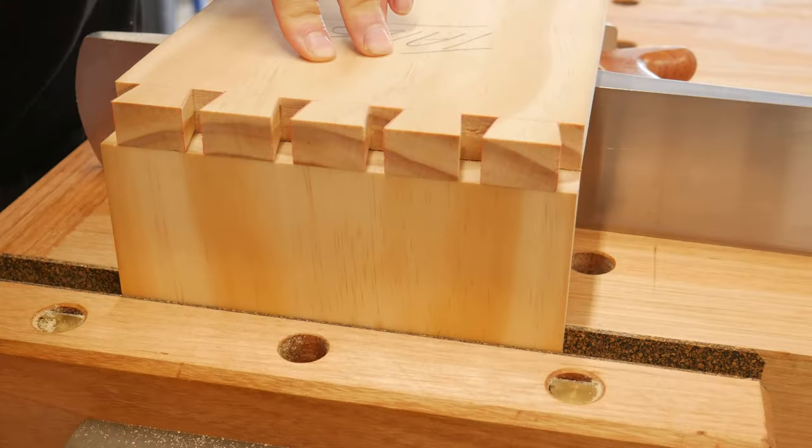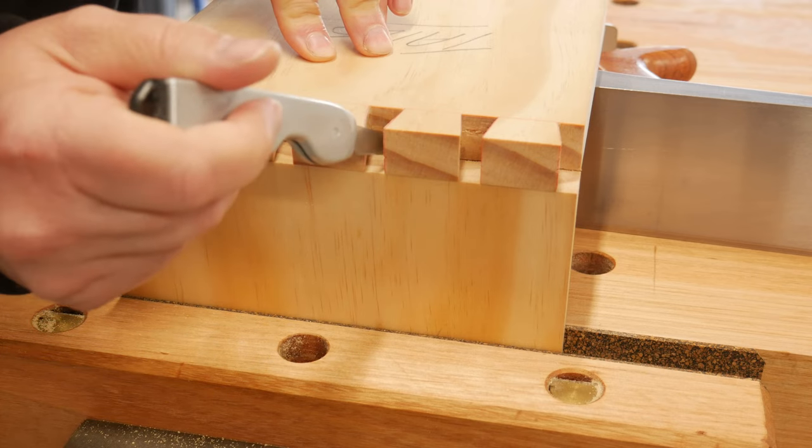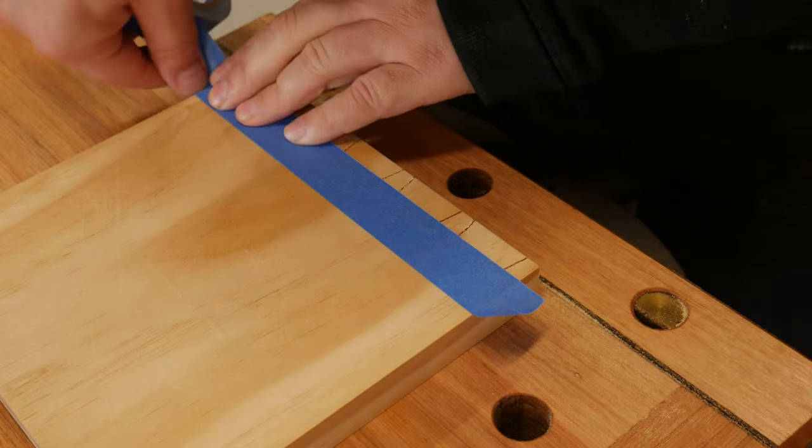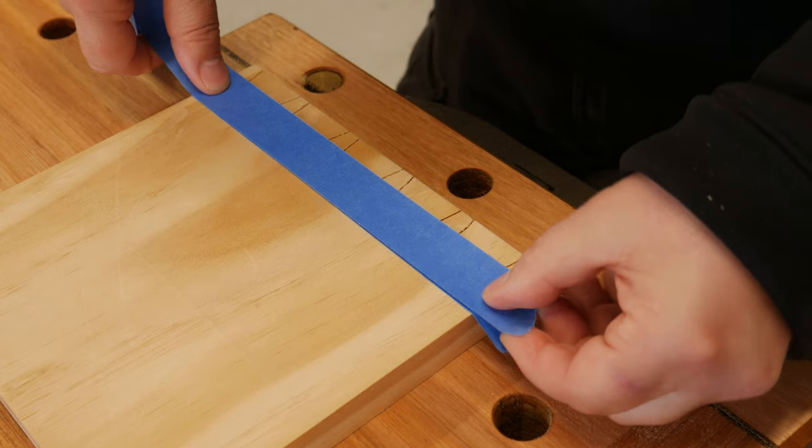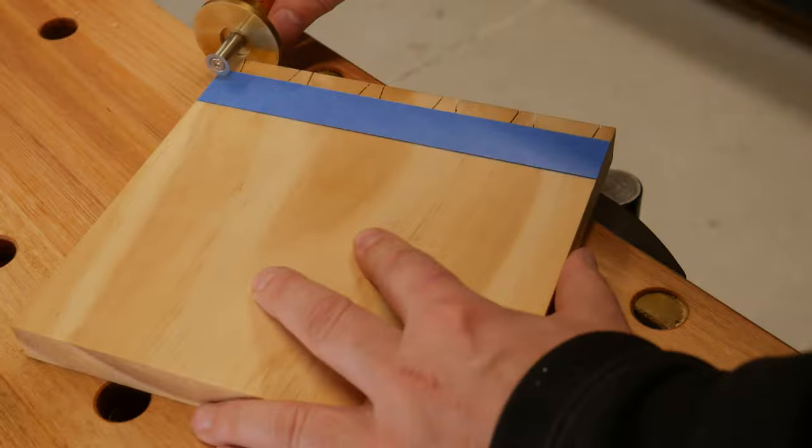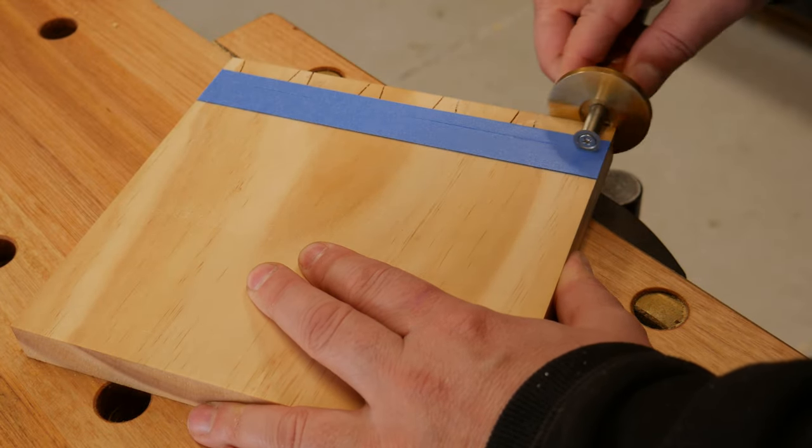Traditionally the pins are chopped out and the tails are marked out with the knife. With the offset method, the pins stay in for now. The tail board gets flipped and strips of masking tape get applied to the back and the excess removed. With the marking gauge previously set from earlier, the tape is cut along its original baseline, removing the excess to form a rabbit or rebate.